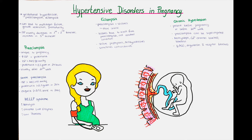In the mother, hypertensive disorders during pregnancy can cause multi-organ system dysfunction such as renal failure, hepatic failure, CNS hemorrhage and stroke, pulmonary edema, placental abruption, and disseminated intravascular coagulation. In the baby, it can cause growth restriction, prematurity and perinatal death.